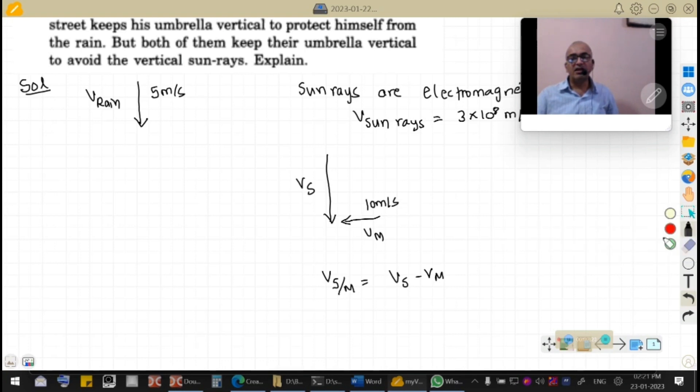So we can analyze in this way: this is the velocity of sun, and minus velocity of man is in this direction, 10 meters per second. This speed is 3 × 10^8 meters per second.